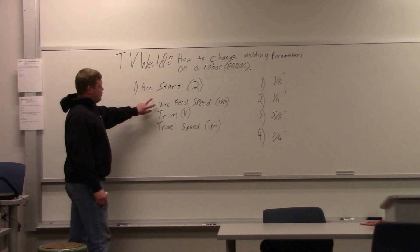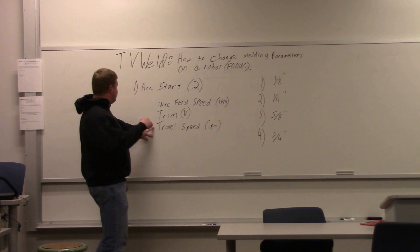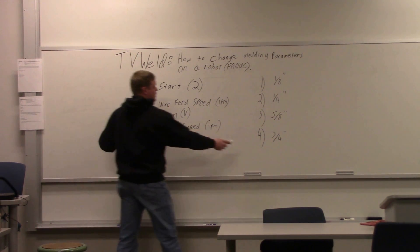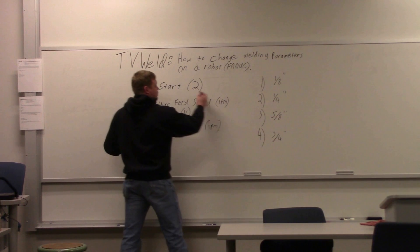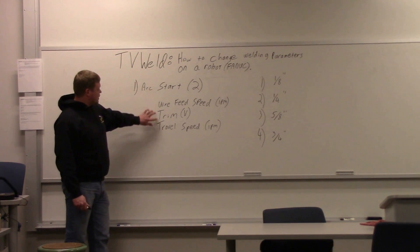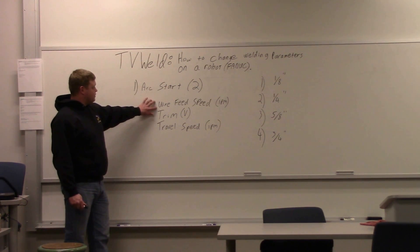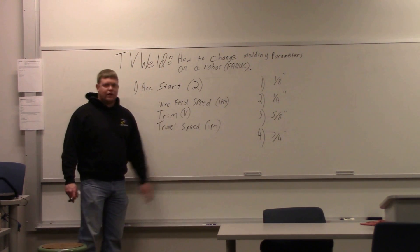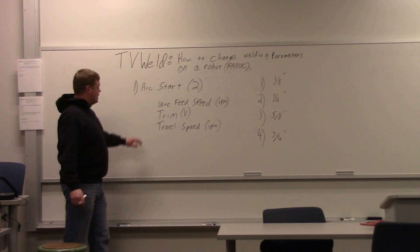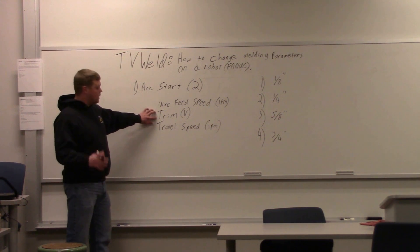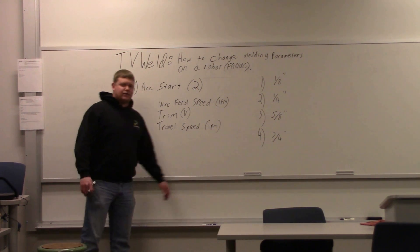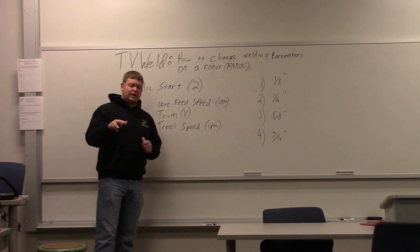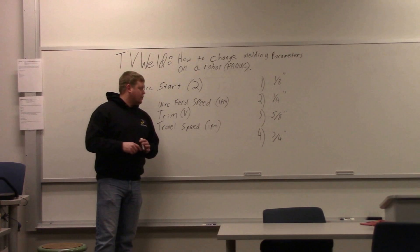There are three numbers under each set: wire feed speed, trim, and travel speed. Wire feed is in inches per minute, just like a regular MIG welder — turn it up or down. Trim is voltage, same thing, up and down. It's usually a smaller number, somewhere between one and five. Travel speed is inches per minute — how fast the robot is going to move. When you enter that stuff, you have to hit the enter button afterwards. A lot of people think you can just use the arrow keys to move to the next one, but it won't register unless you hit enter.